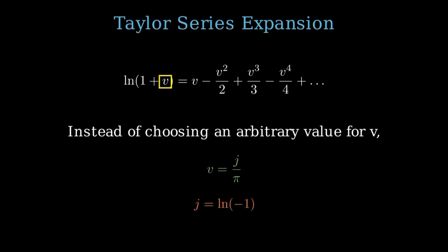Here, j is the virtual unit in the virtual number system, where j equals the natural logarithm of negative 1. This substitution transforms the series into a new form, which we will now explore step by step.